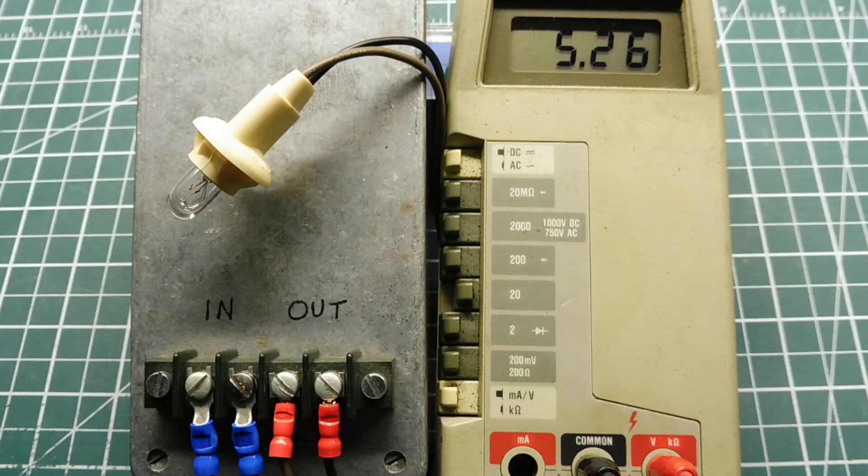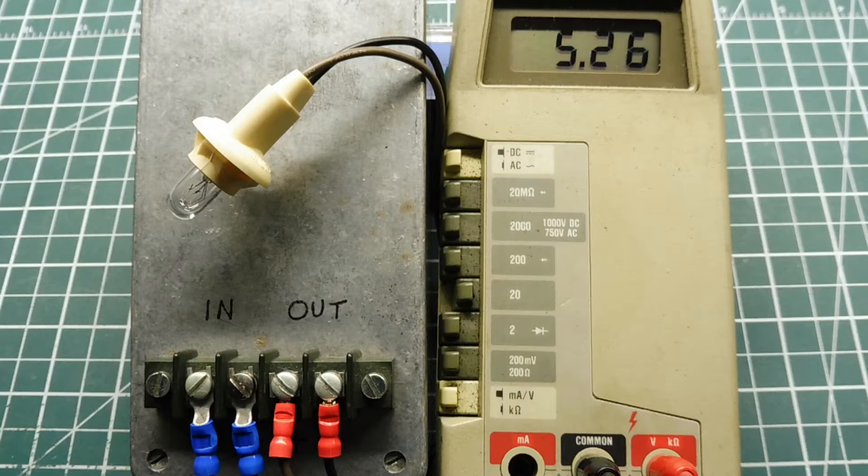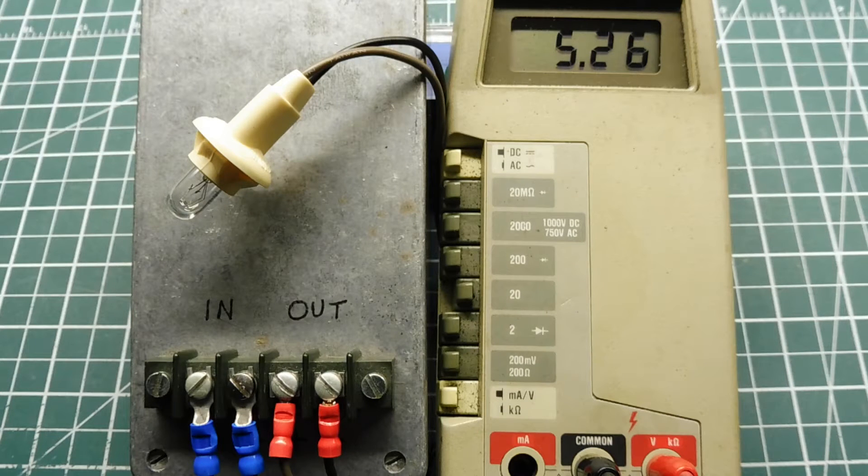Now this circuit was built for a mountaintop repeater, a radio repeater, which was solar powered. And when the voltage dropped below 10 volts, the system would become unstable, so we had to shut off the power to the load.